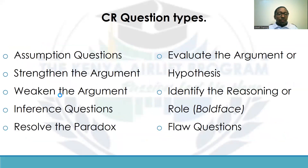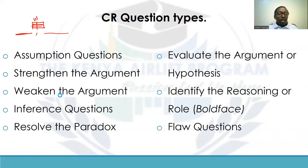There are several types of CR question types; these are the main ones, though there are some that don't fall into any of these categories. First, we have assumption questions, where you have a premise and a conclusion but the connecting part is wrong or missing. The author made a connection between the premise and the conclusion that was untrue, and you are required to find that assumption.